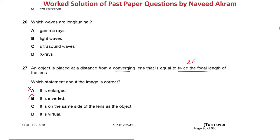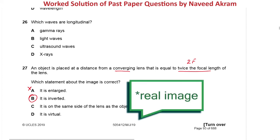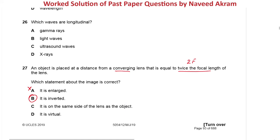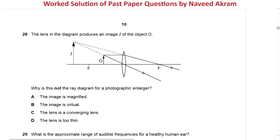Let's eliminate options C and D as well. Option C states the image is on the same side of the lens as the object — no, it is on the other side. Option D states the image is virtual — no, it is a real image. So option B is confirmed as the right answer. The next question is also from May/June 2019 paper 1 variant 2, question number 28.